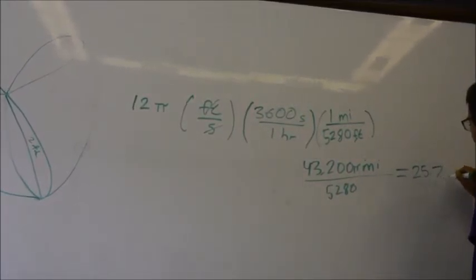So if we do these calculations, 12π times 3600 over 5,280, we end up with 43,200π over 5,280. So if you put this into your calculator, this calculation results in 25.7 miles per hour.